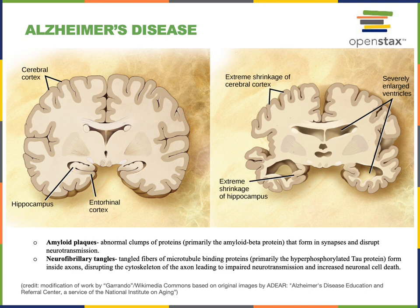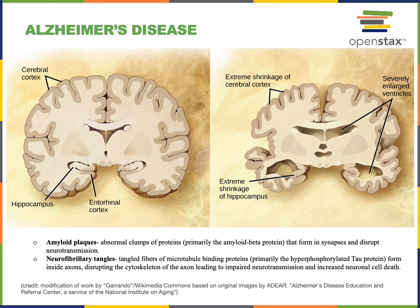As the pathology spreads throughout the cerebral cortex, the cognitive impairments become more profound, eventually leading to personality changes, loss of executive functioning skills, and confusion. We can see in the image on the right that there is extreme shrinkage of the hippocampus and cerebral cortex in the brains of patients who have died from Alzheimer's disease. They also have severely enlarged ventricles — the spaces within the brain become larger as brain cells die.